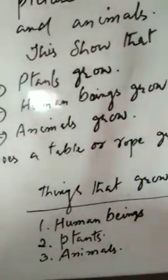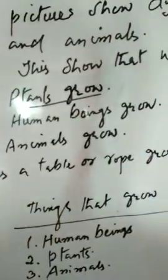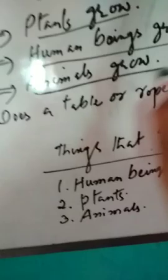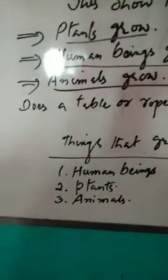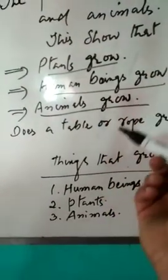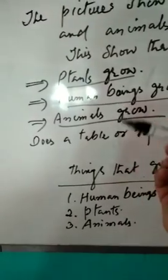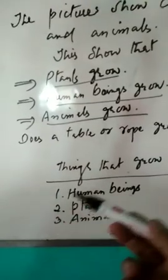This shows that with the passage of time, plants grow, human beings grow, animals grow. Human beings, animals, cockroaches, cows - you grow and grow and grow.